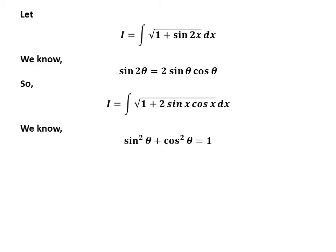We also know the famous identity for any angle theta: square of sine of theta plus square of cosine of theta is equal to 1.